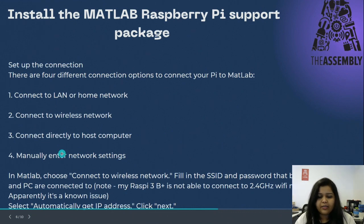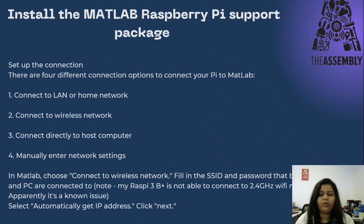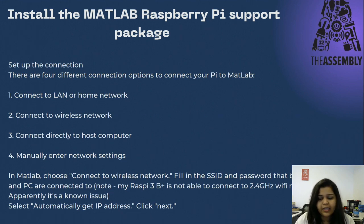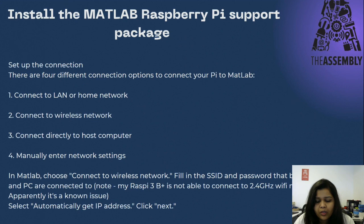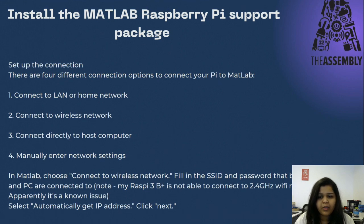Next, set up the connection — this is a very important step. You can use different kinds of connections, but it is easiest to connect with a wireless network. Choose the SSID and password of your PC's network or your home network to connect with the Raspberry Pi. For the wireless connection, it will automatically get the IP address after clicking the Next button.